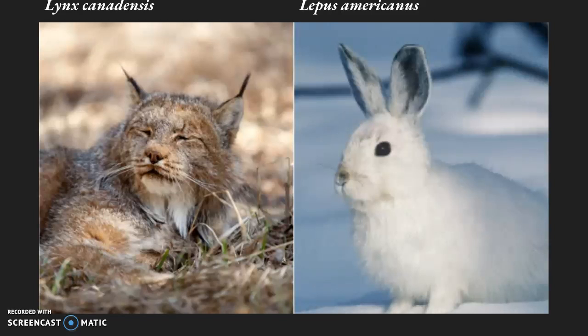Whereas species belonging to higher trophic levels will fall victim to a population decline as their prey has been stripped from their diet. This can be seen with the sinusoidal population cycle of the Lynx canadensis and Lepus americanus, oscillating every 10 years.